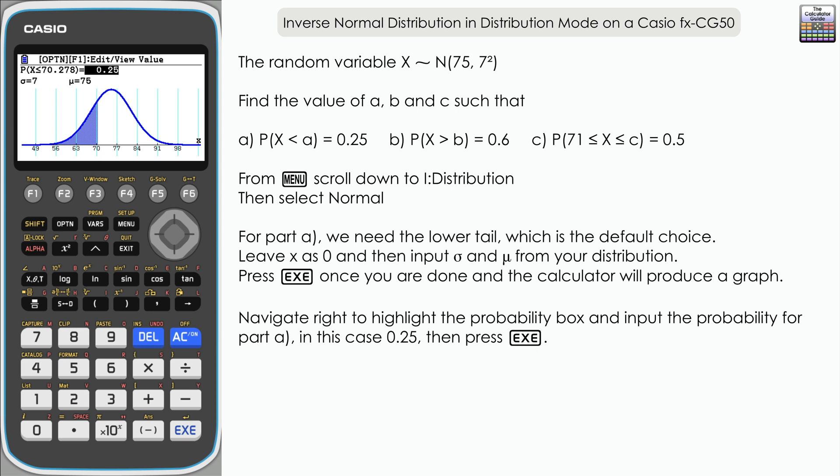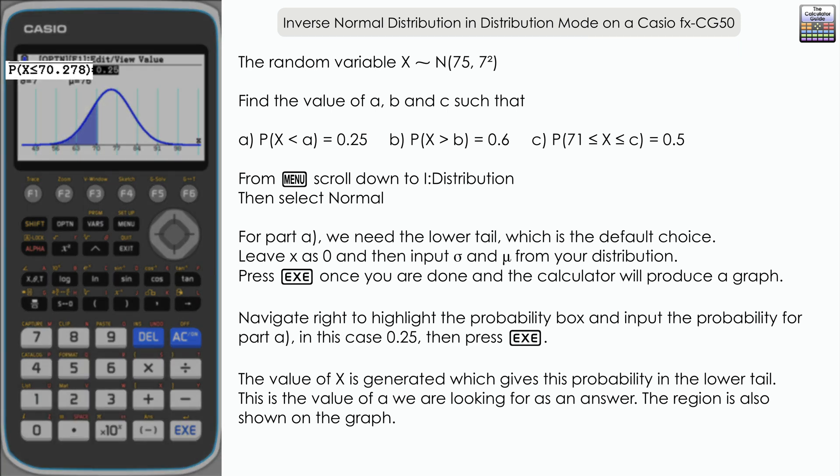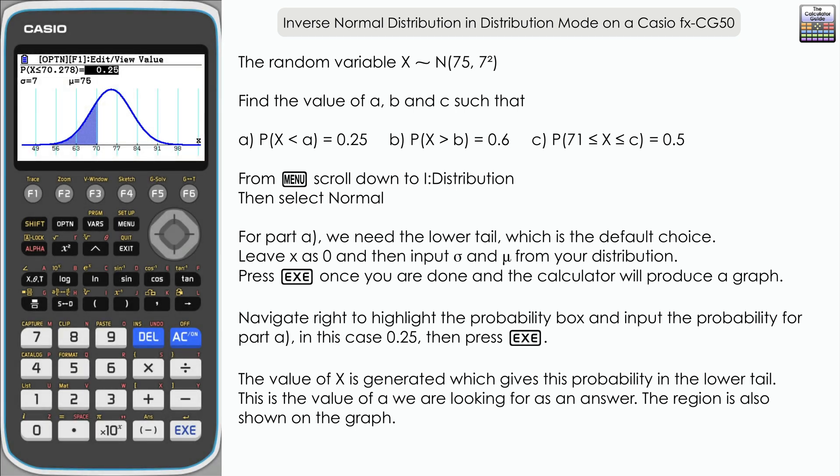And then you can see that a value has been generated within the probability space there. X is less than or equal to 70.278, which also means X is less than 70.278, and that is the value of a that we need to find for this question.